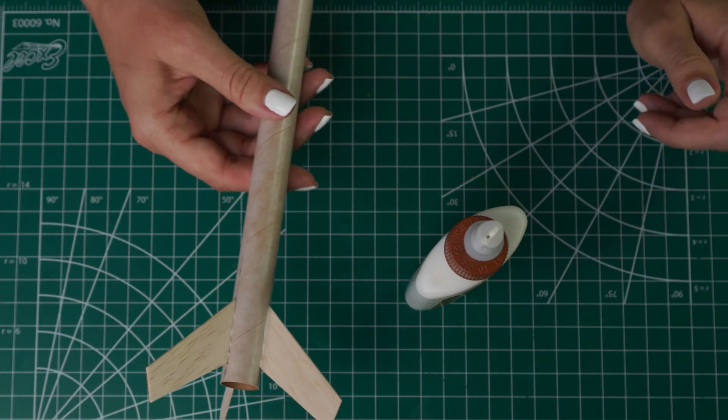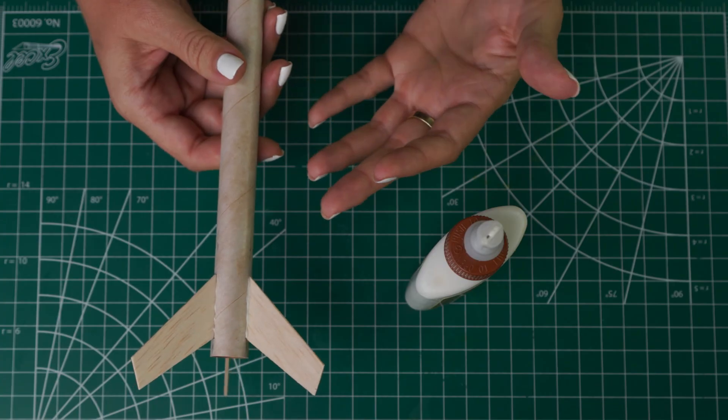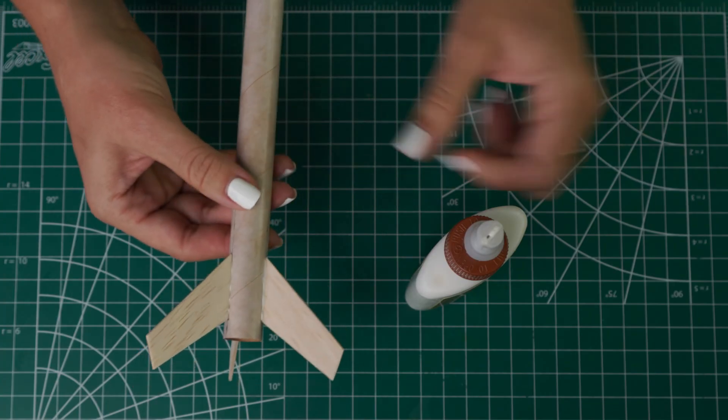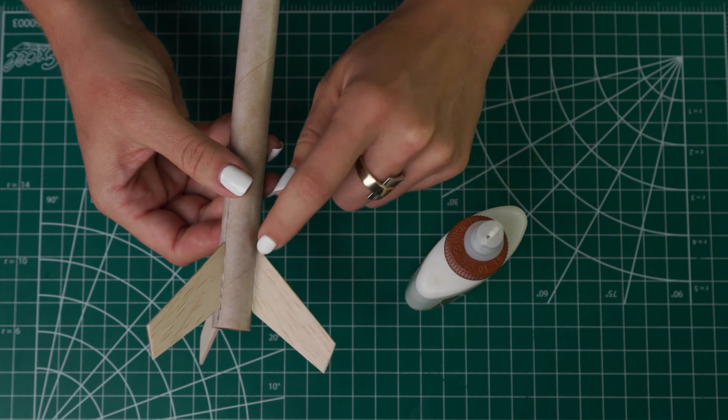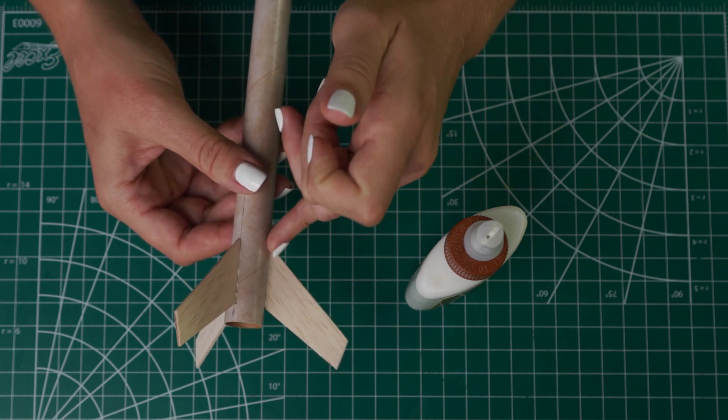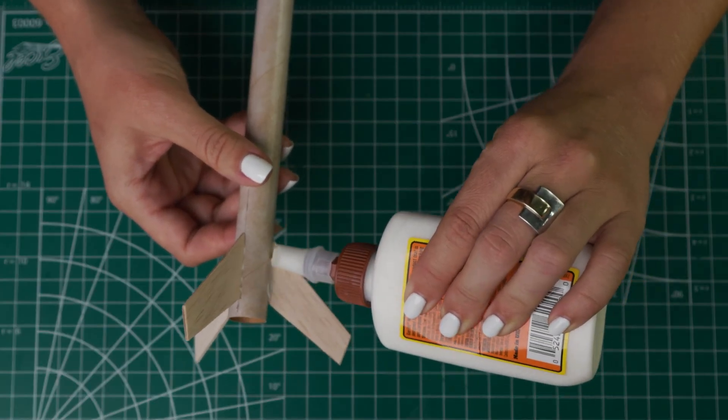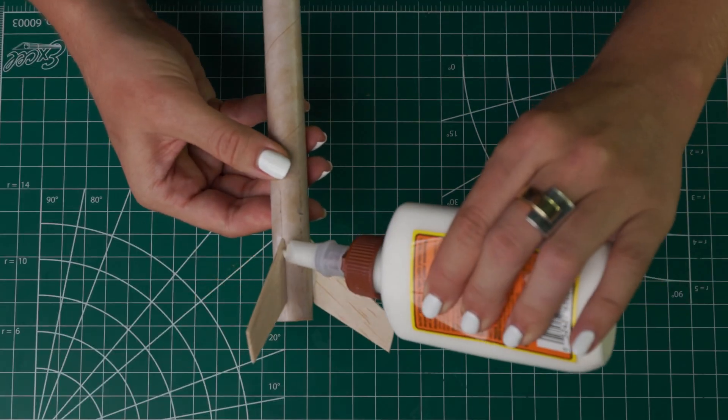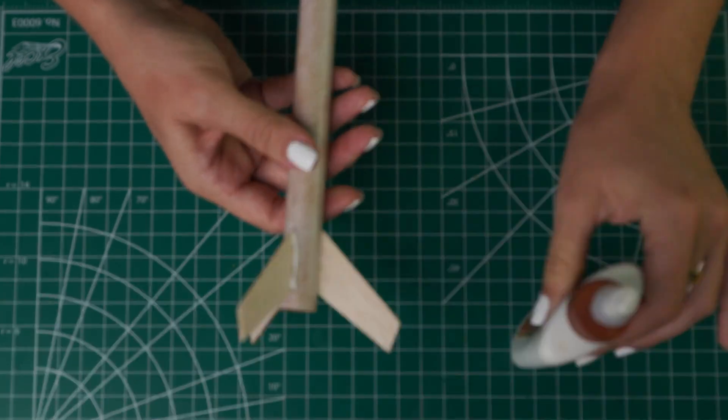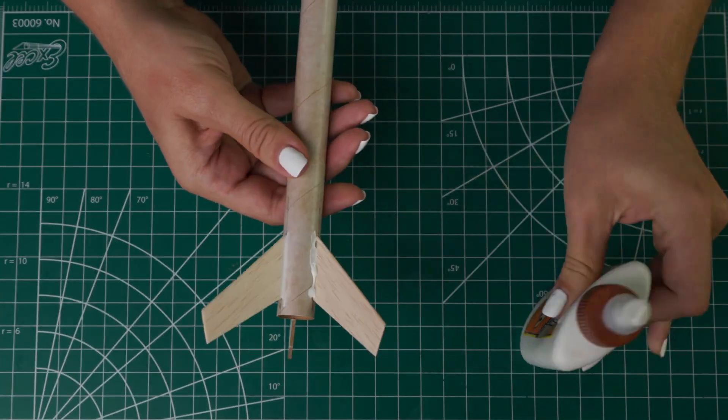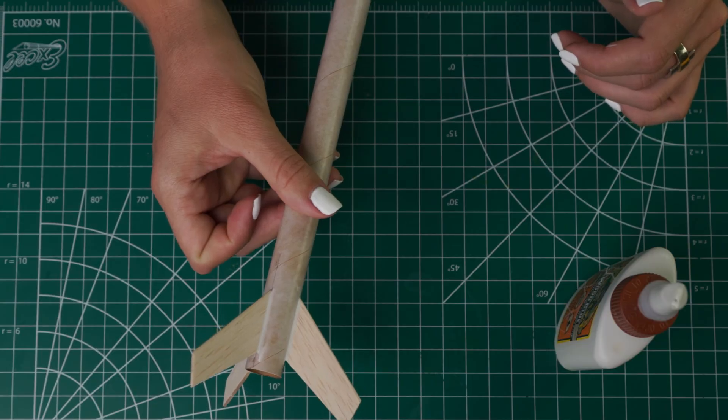Once your fins have dried if you want to you can add fillets on each of them just to increase stability and strength of that attachment. To do that you'll add just a thin line of glue on this seam and then I like to just use my finger to push it into that seam and we'll do that all the way around. Then again we'll just let that dry.